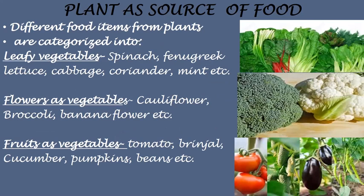Leaf vegetables include spinach, fenugreek, lettuce, cabbage, coriander, and mint. Flowers used as vegetables are cauliflower, broccoli, and banana flower. Fruits that are used as vegetables are tomato, brinjal, cucumber, pumpkin, and beans.